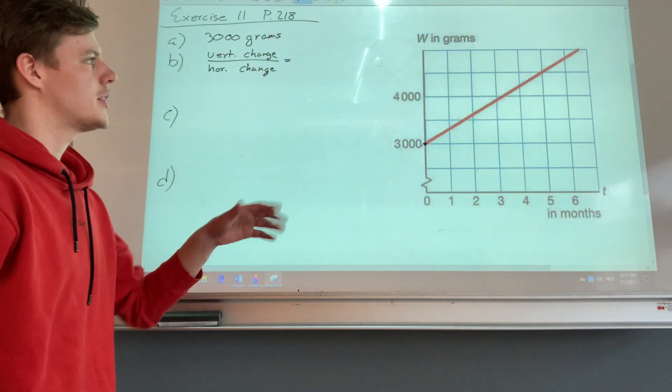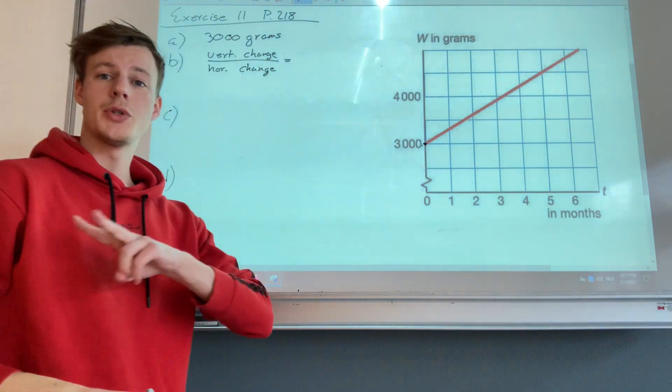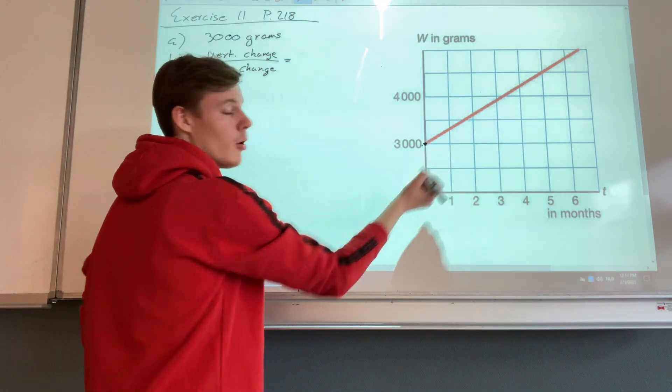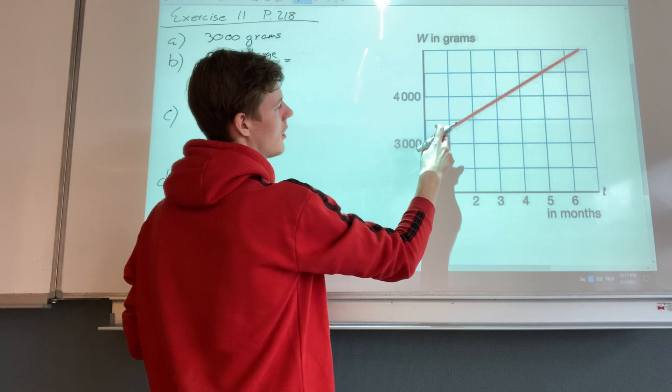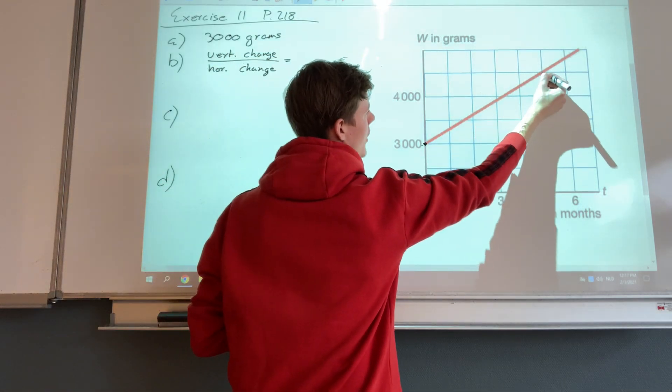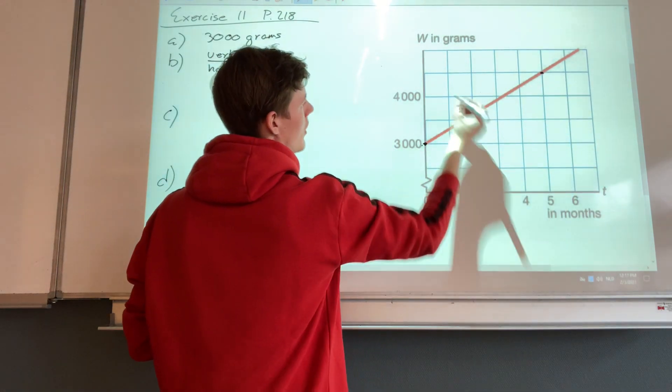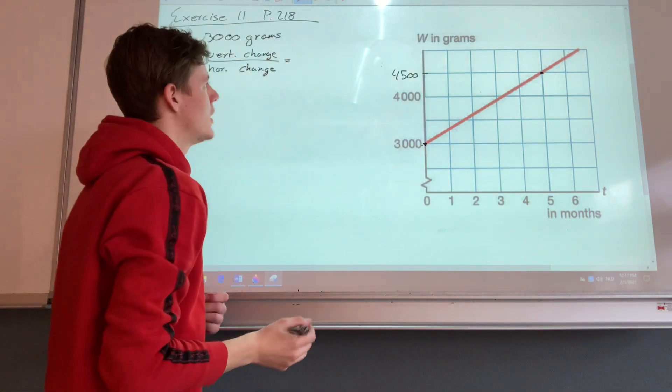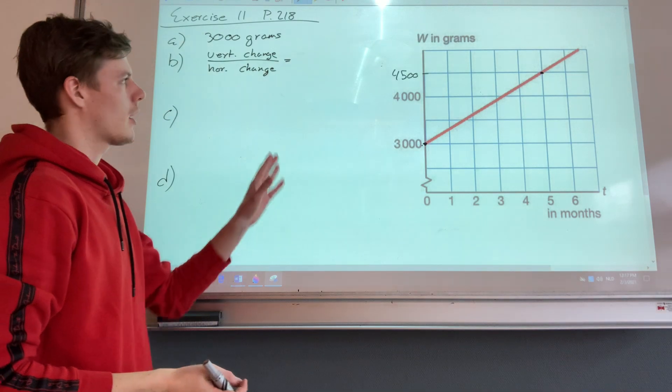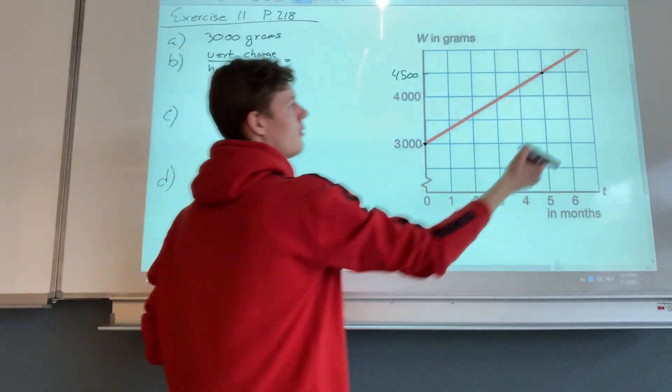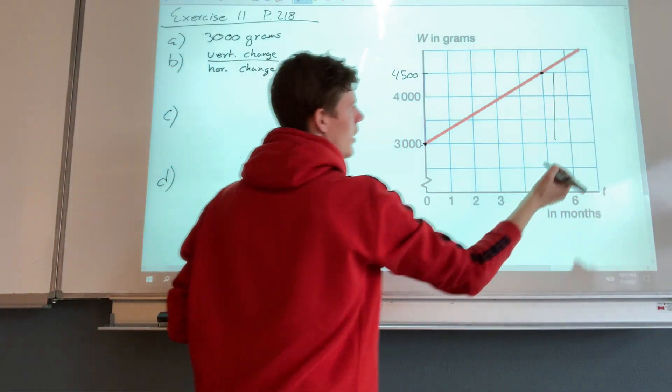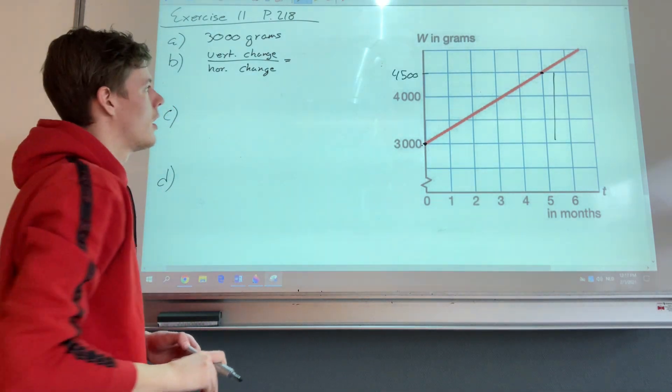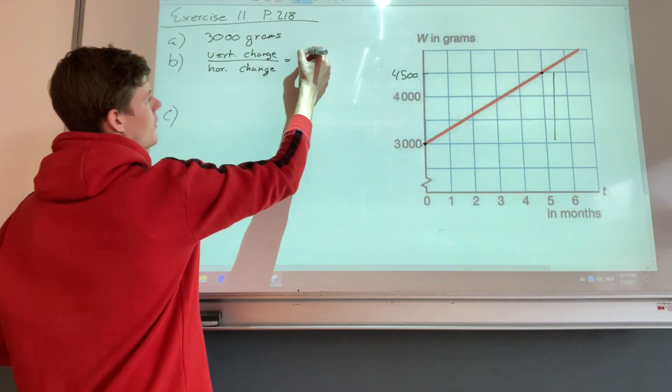Okay, for this to calculate properly you need two nice points. Well we have one over here, and another nice point is over here at four and four and a half thousand. So we have two points now and we can calculate the vertical change here, which is from 3,000 to 4,500 is 1,500.